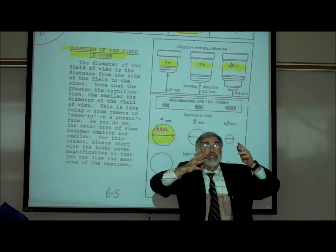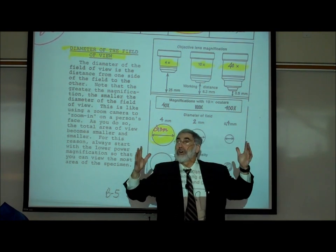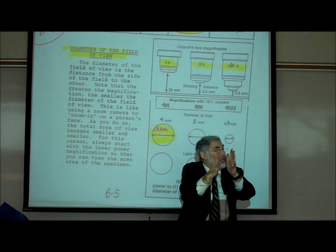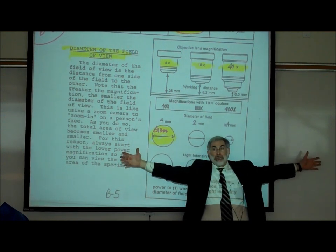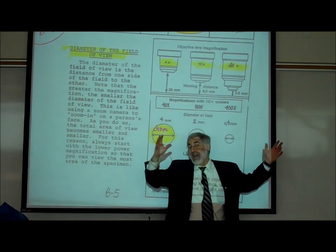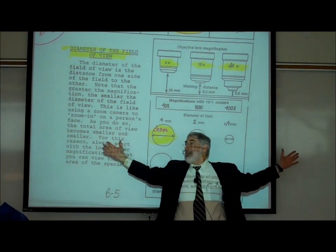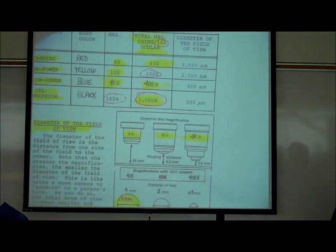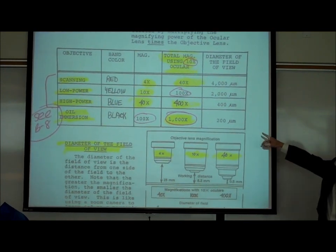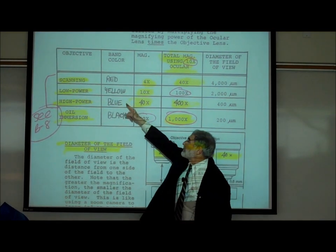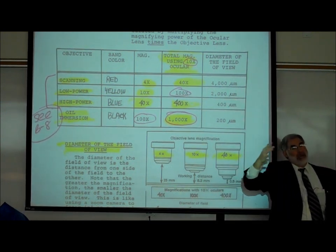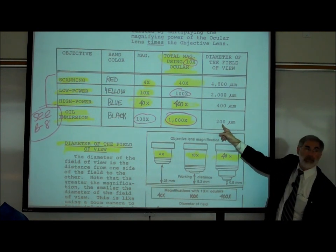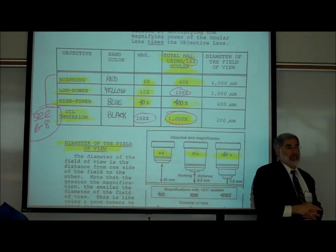You can zoom in on just someone's eyes or mouth. The more you increase the magnification, the smaller the area you see. As you reduce your magnifying power for a wide angle shot, you take in and see more. That's why, with the lowest magnification, you've got the biggest diameter of the field of view.